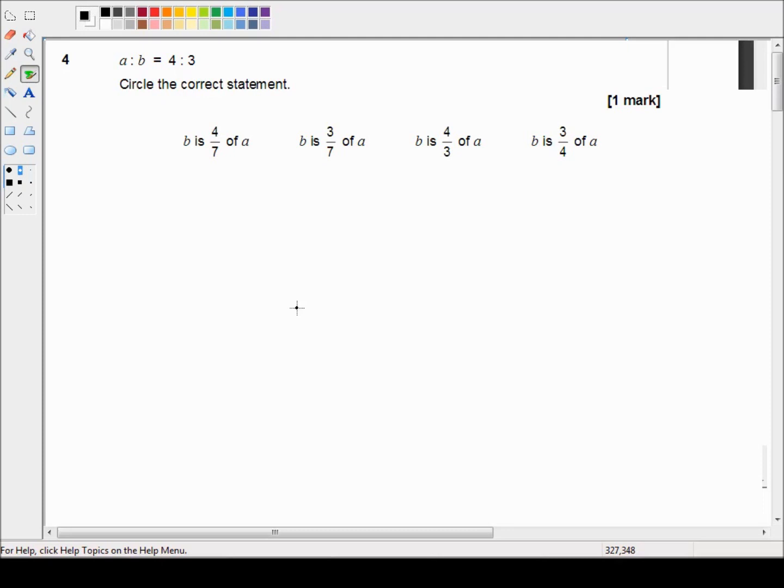This is a non-calculator paper so we're not allowed to use calculators. And we pick it up in question 4 which reads the ratio of A to B is equal to 4 to 3. Circle the correct statement.